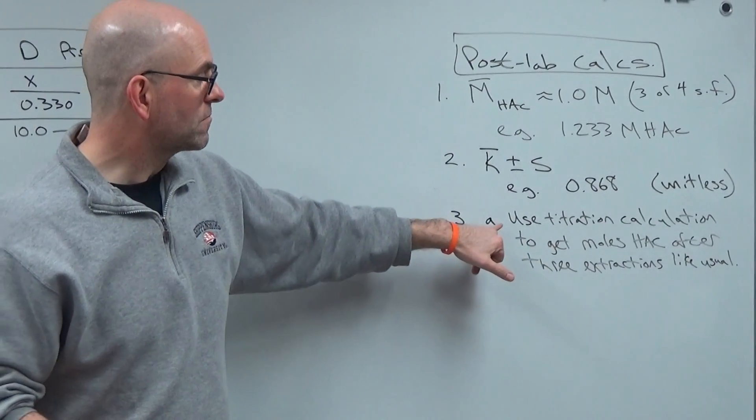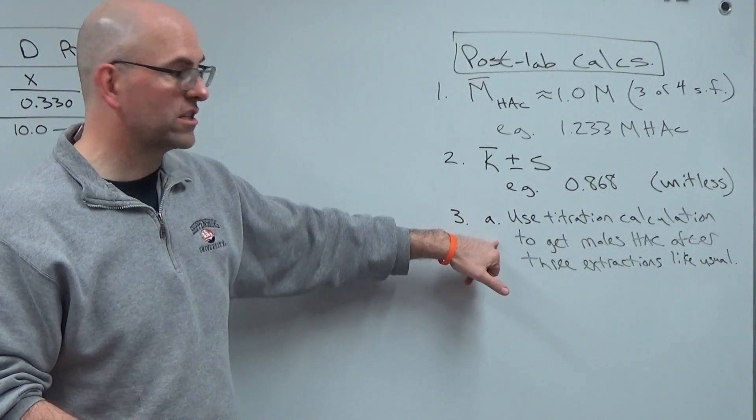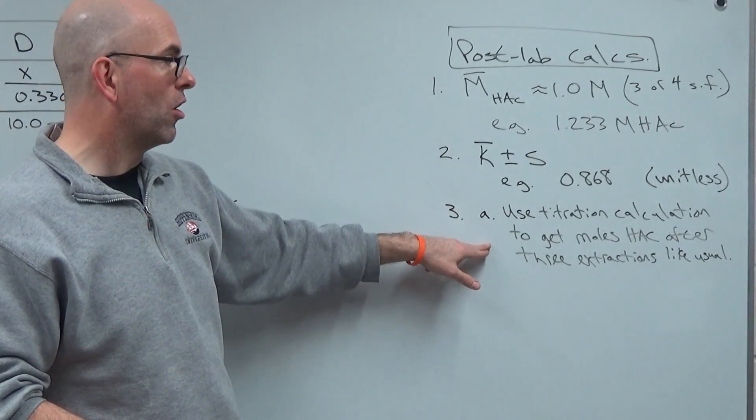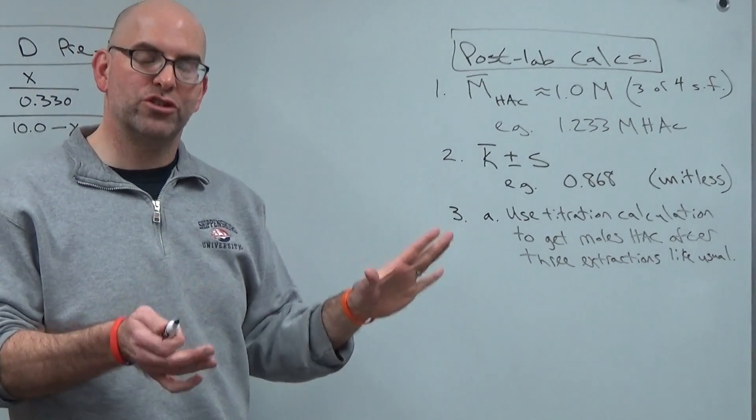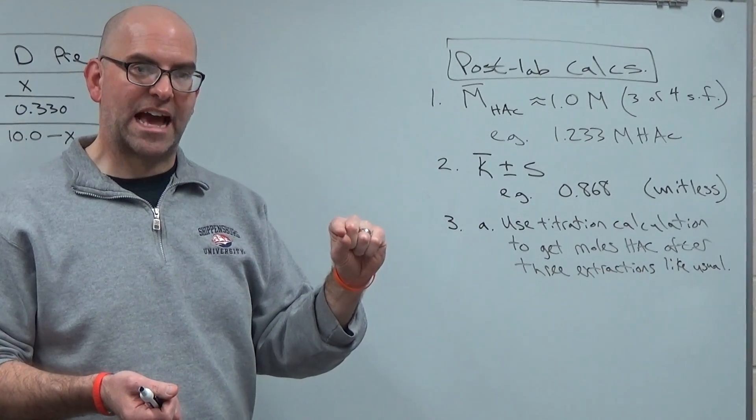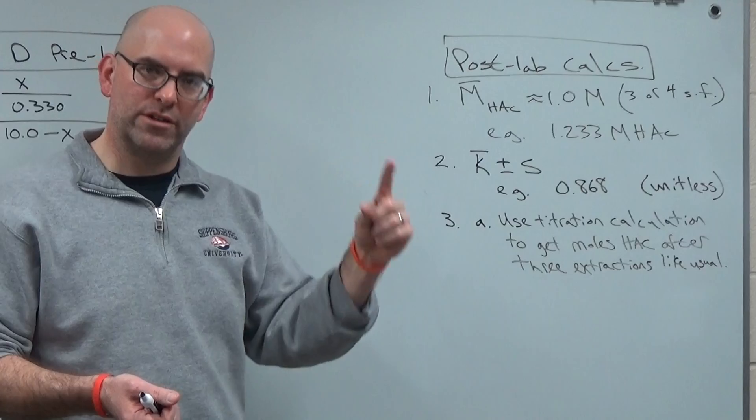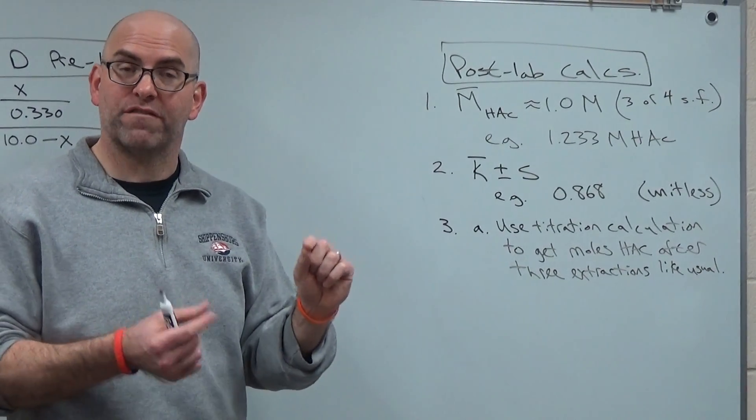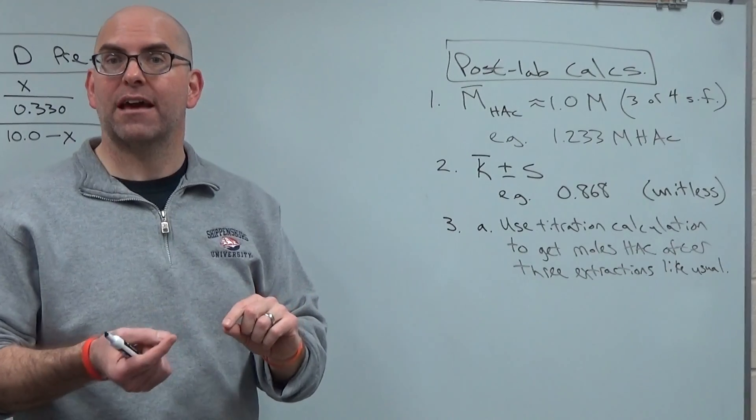I think where the calculations get a little tough is in number three. Not 3A. 3A, all you're doing, and keep in mind what did you do in step three, procedure three? You extracted the acetic acid three times. You did three extractions with half a milliliter, 0.50 milliliters of TMBE. That's what you did.